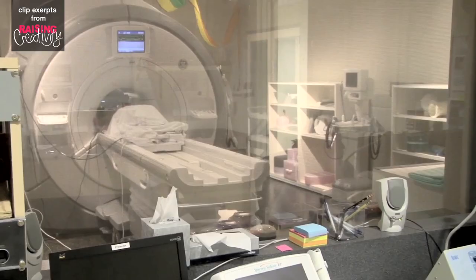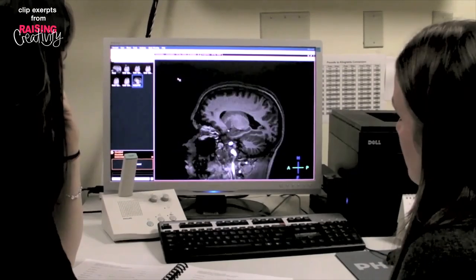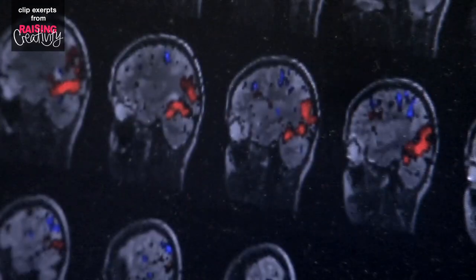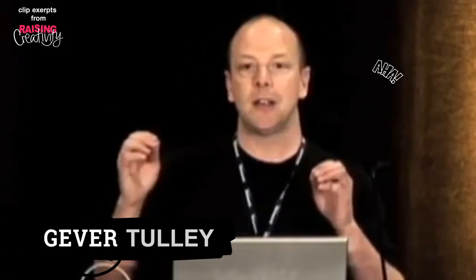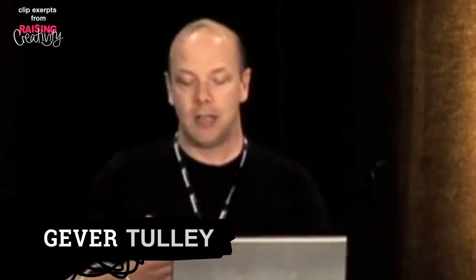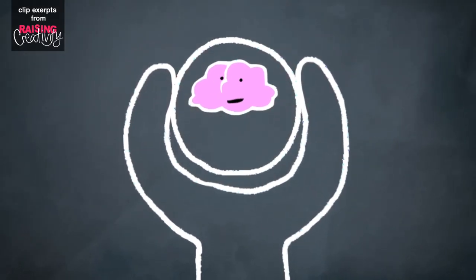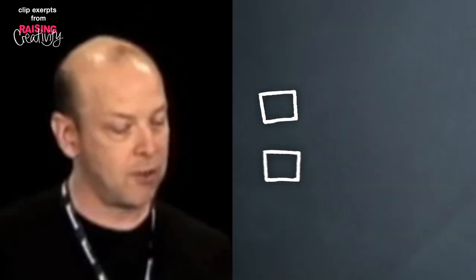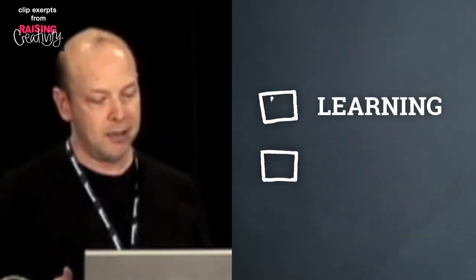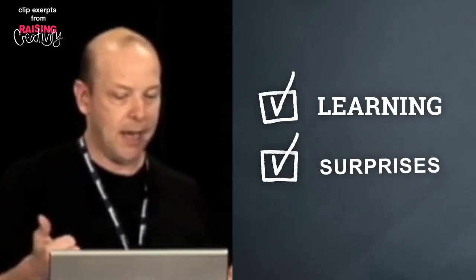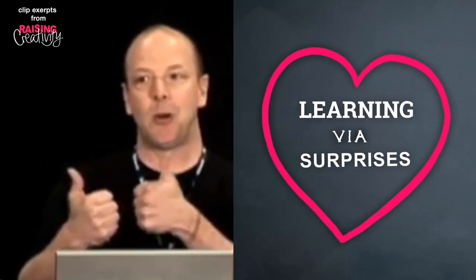fMRI studies show that we receive some of our highest dopamine doses during the discovery phase of learning. The exact aha moment has a chemical analog. You get surprised, you get a little jolt to your learning center so you'll remember what surprised you. So to simplify: we like learning, we like surprises, and we really like learning that surprises us.